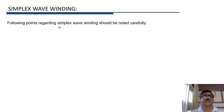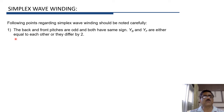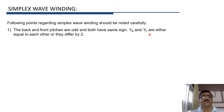Let us now note some important points related to simplex wave winding. The first point is the back pitch and front pitch are always odd and both have the same sign — meaning both YB and YF are either positive or negative. YB and YF can be equal to each other, or if they differ, the difference must be 2.